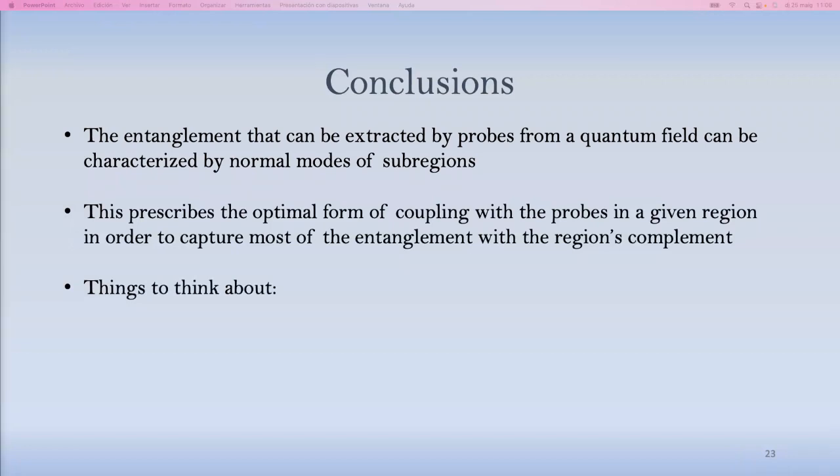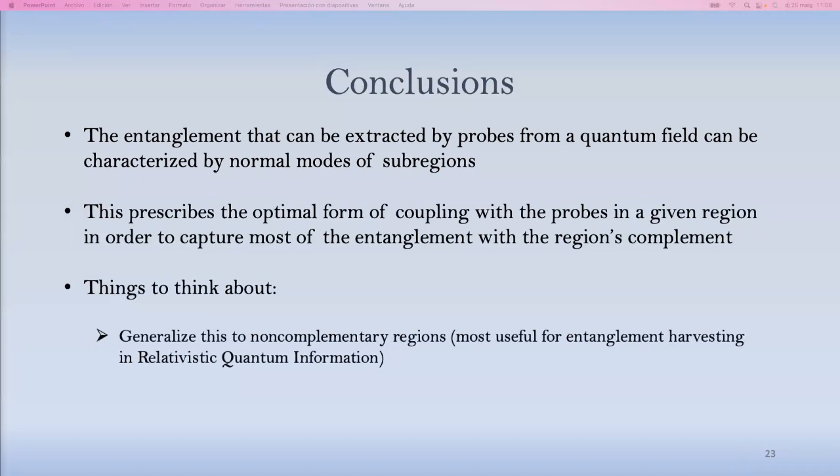And a non-exhaustive list of things to think about after doing this could include generalizing this approach to non-complementary regions, which is work in progress. If you want to hear more about this, ask Kelly also. She's in the background, but she'll be around. We can think about adapting this to smooth switchings. Maybe there's something to be said about things like the time-like tube theorem in algebraic quantum field theory using this kind of approach. And it's natural to apply this also to curved spacetimes. I mean, the setup is pretty much the same. Maybe there are subtleties related to the choice of states and cutoffs and things like that. But there's no reason why this shouldn't be applicable to de Sitter spacetime.